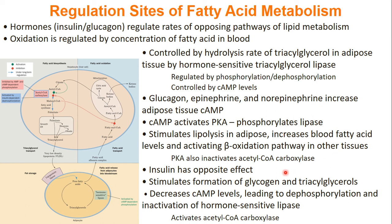Insulin will do the exact opposite effect, where you want to stimulate the formation of glycogen and triacylglycerols. When we have insulin, we have a lot of energy, so our cyclic AMP levels will decrease. Then you have a dephosphorylation and an inactivation of our lipases, while an activation of ACC.